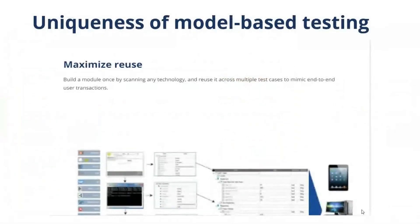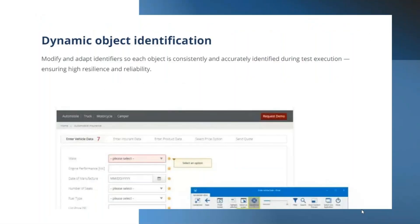We'll now look at what model-based testing is and some of its top uses. It maximizes reuse — you can build a module by using scanning technology and reuse that module across all your test cases. If you have one page, you can simply get all the elements on the page and reuse them for test case creation. There is also a concept called dynamic object identification.